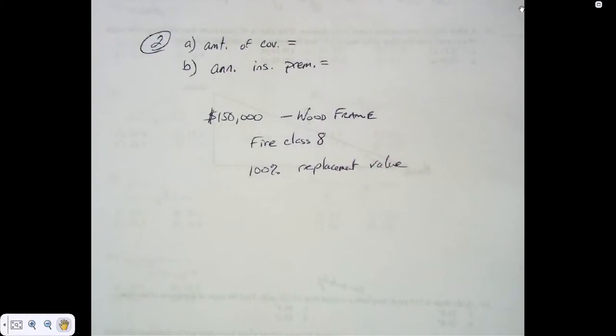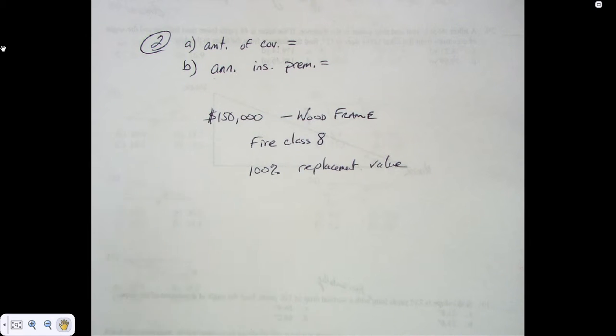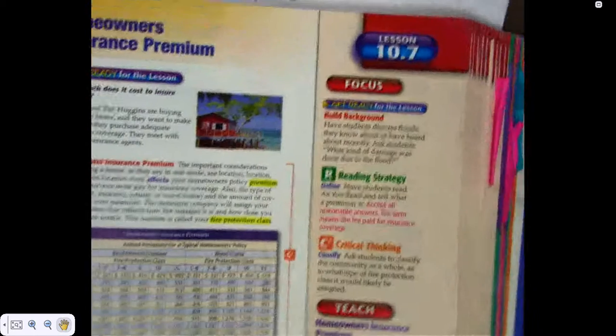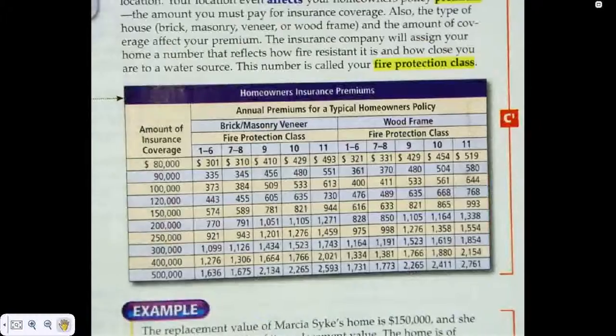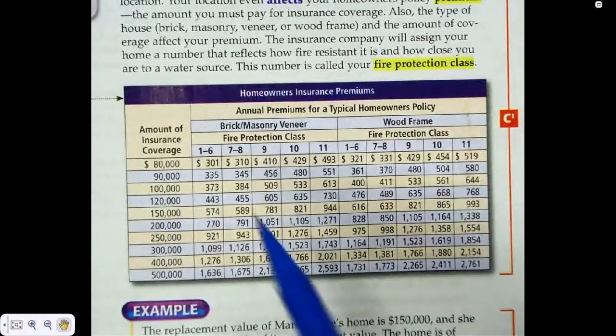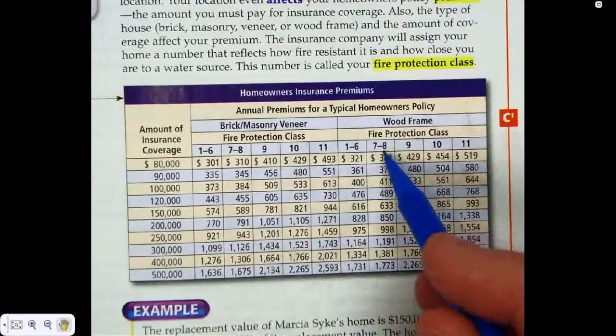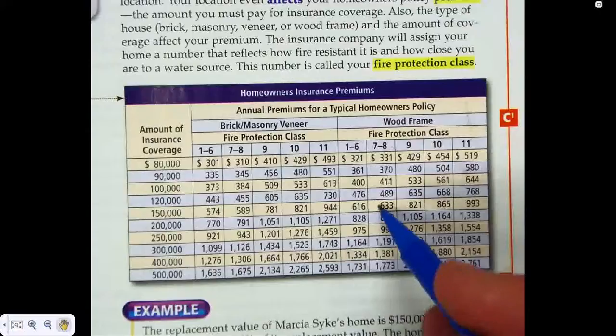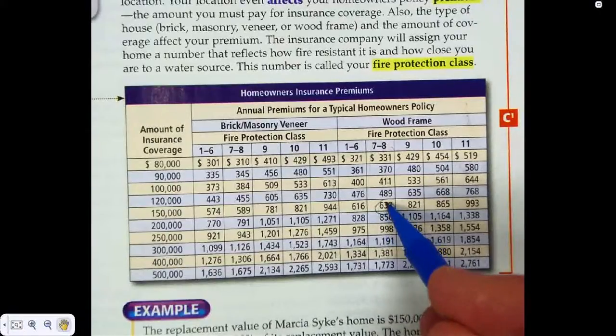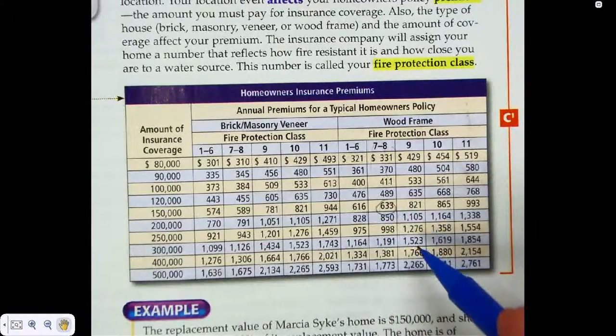Okay, so let's go over to wood frame. Turn the light on maybe a little better there. What did they say was class what? 8 of wood frame. So here is our column right here. So we go down, what was it, $150,000? $633. So that's our premium.